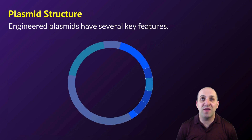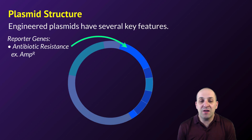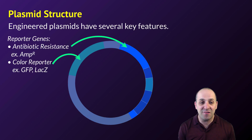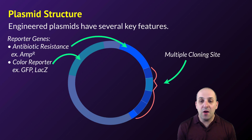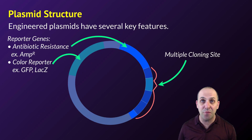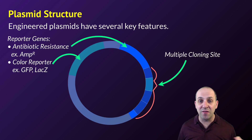Engineered plasmids have several things on them that make them useful for genetic engineering. They have reporter genes — genes that help us determine whether or not a bacterial cell has taken in our engineered plasmid. These could be things like antibiotic resistance or color reporters that give bacterial cells and their colonies a particular color. Engineered plasmids also have a multiple cloning site, which is an engineered sequence of DNA that has many different restriction sites recognized by different restriction enzymes.